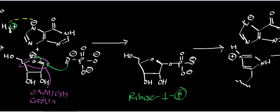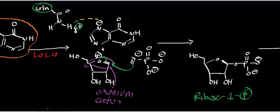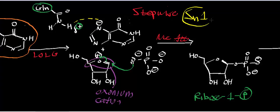In the last step we did loss of a leaving group, and this step is nucleophilic attack. Overall, these two steps — if you think back to your organic chemistry — what happened when you had loss of a leaving group followed by nucleophilic attack in a stepwise fashion? That's a unimolecular substitution, or as people typically abbreviate it, SN1. This is an SN1 reaction sequence that occurs in purine nucleoside phosphorylase, and now we have ribose-1-phosphate.